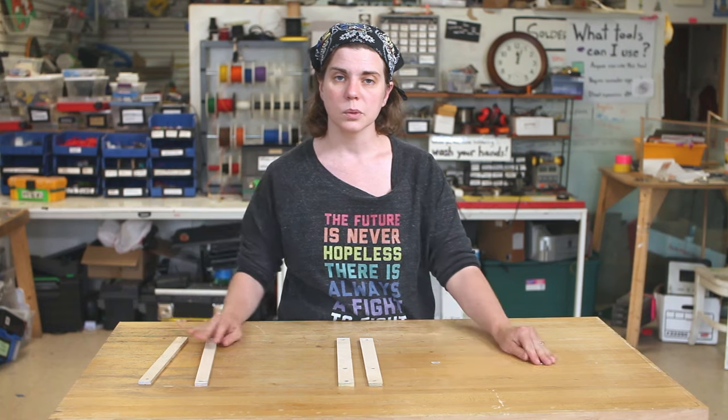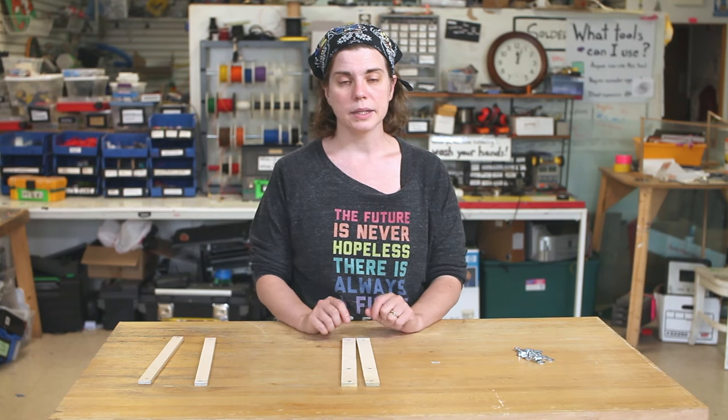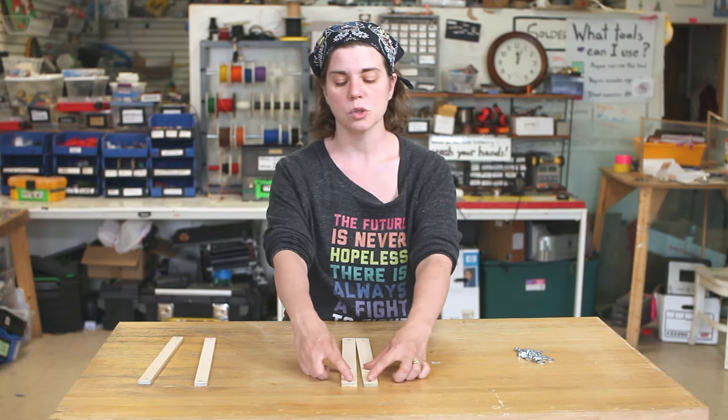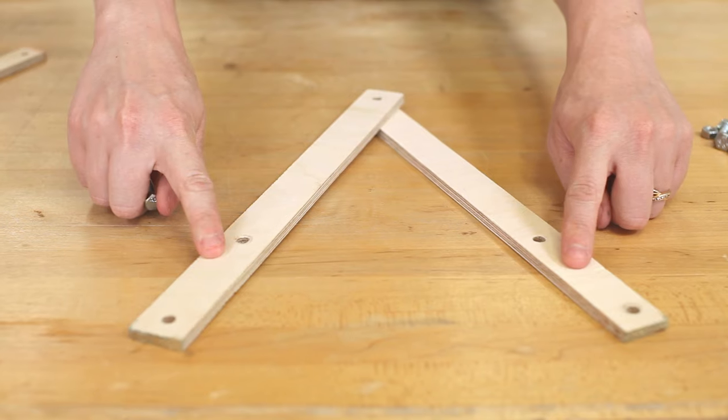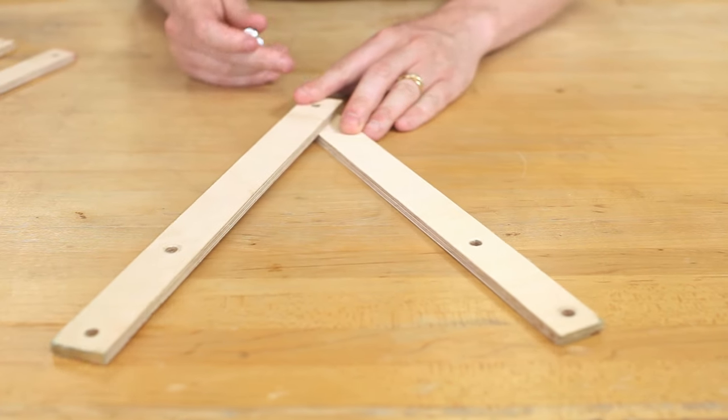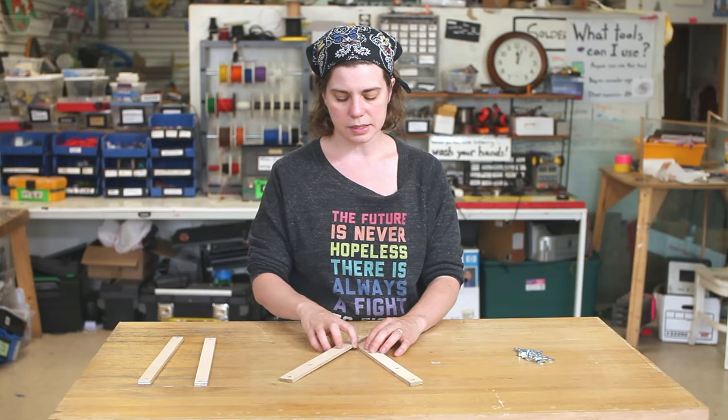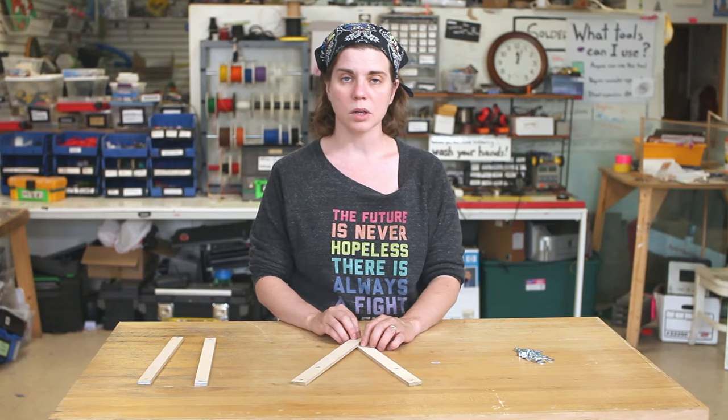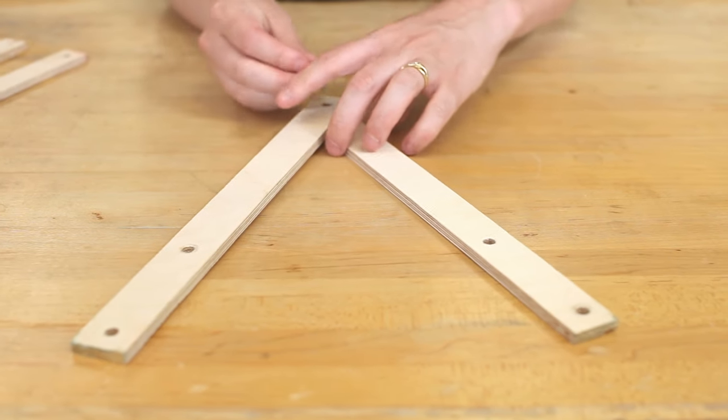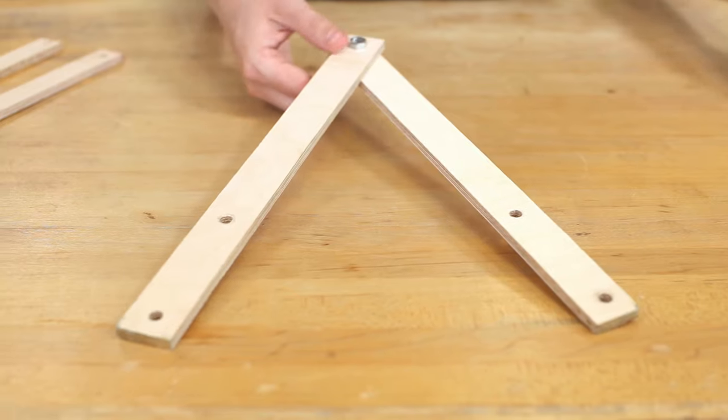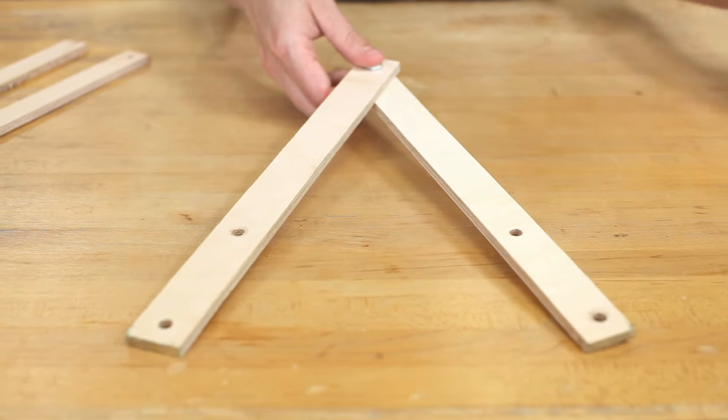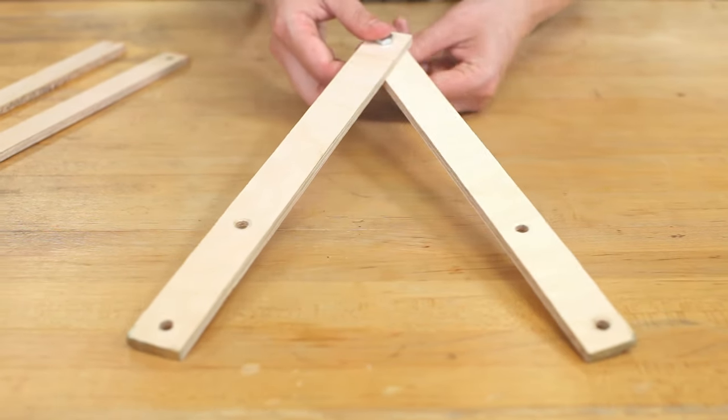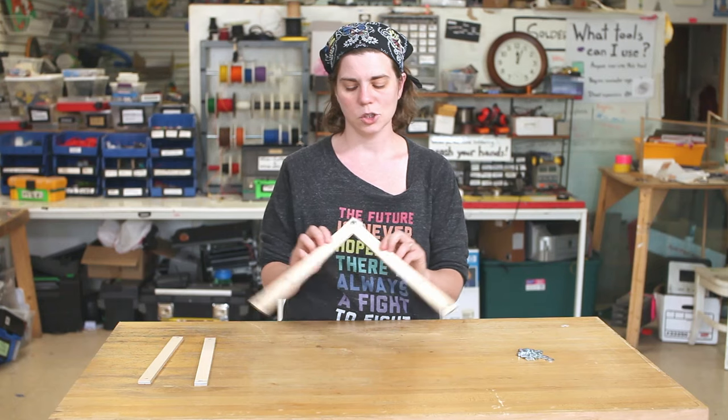We're going to start again with our three holes. Same as last time, we're going to take the short end, the three inch gap, and hold it so that short end is facing you. But this time, instead of making a V, we're going to make a tent. I'm going to take my bolt, drop it in, and put my washer on the back. It should look like this.